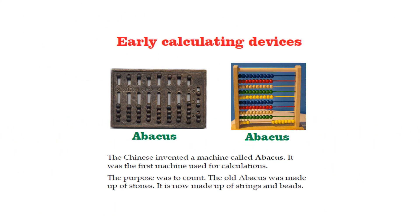Abacus. The Chinese invented a machine called Abacus. It was the first machine used for calculations. The reason it was made was they wanted something that would help them count. The old Abacus was made up of stones, the one you see on the left. It's now made up of strings and beads, the one you see on the right.